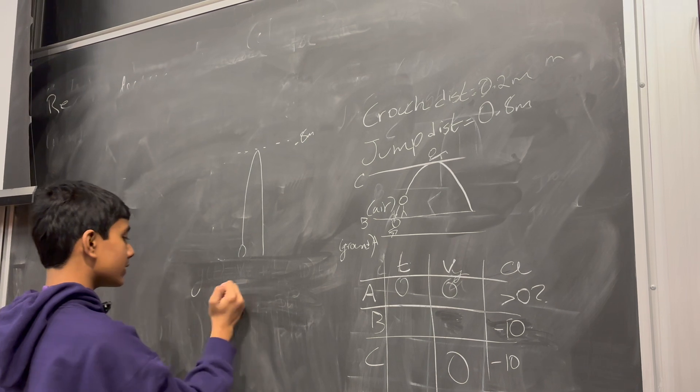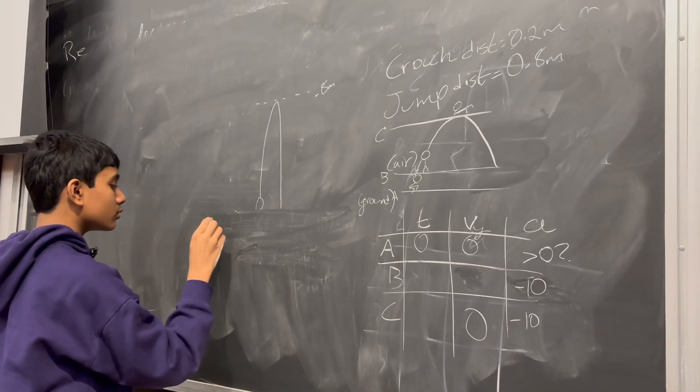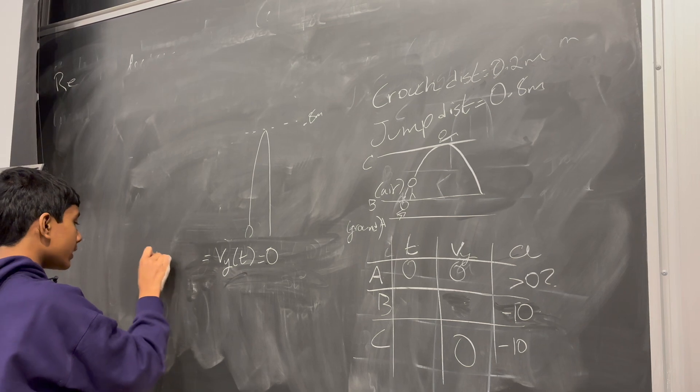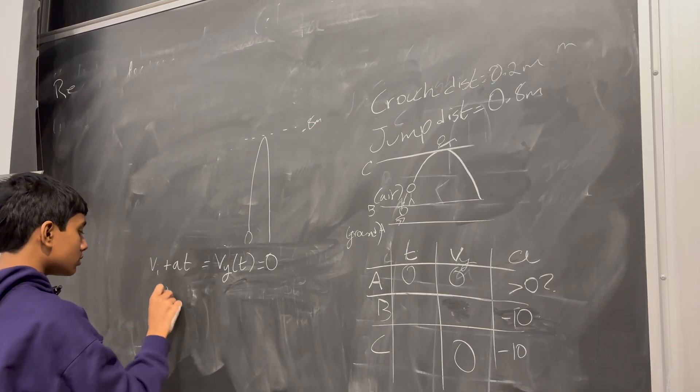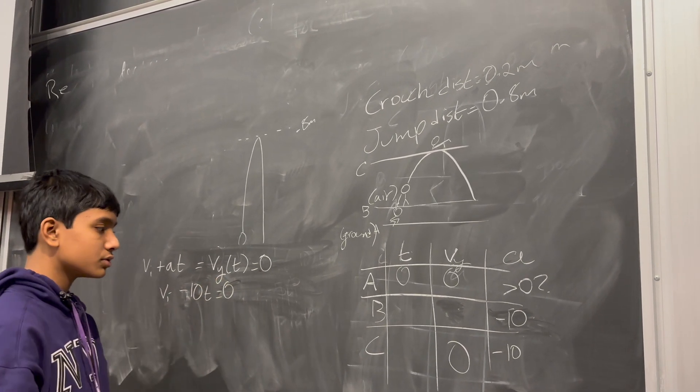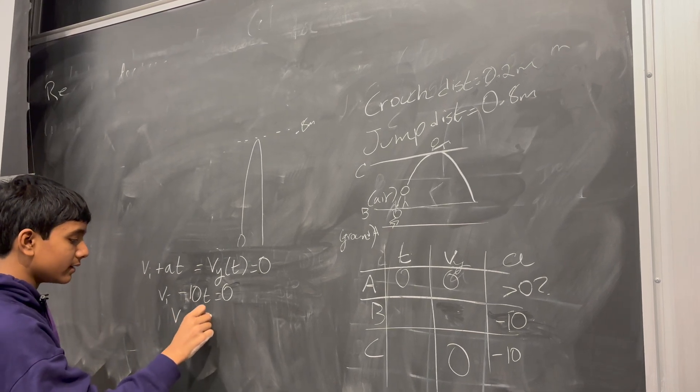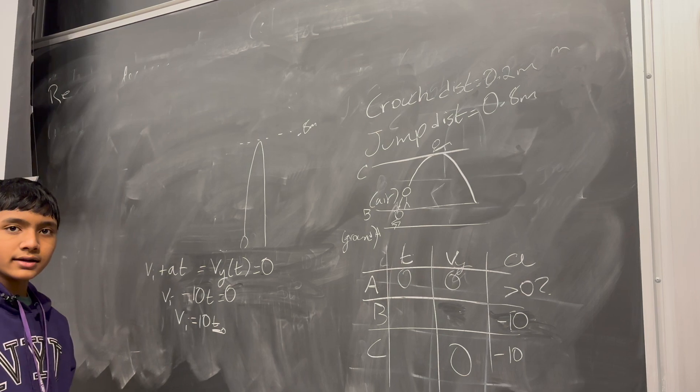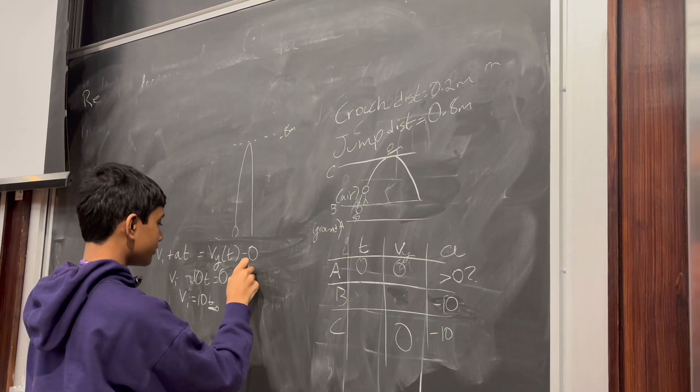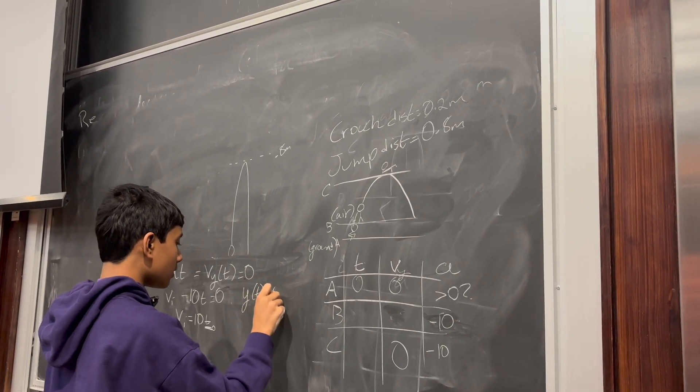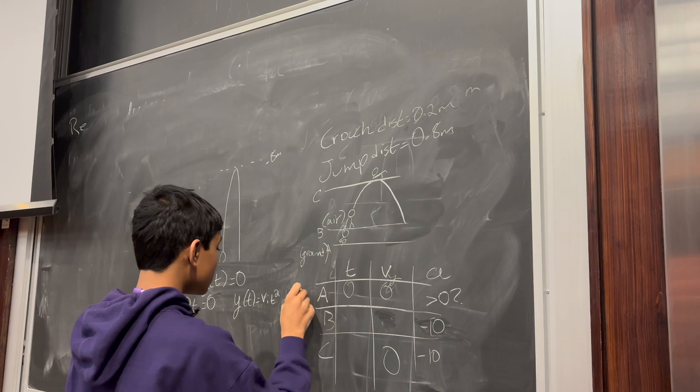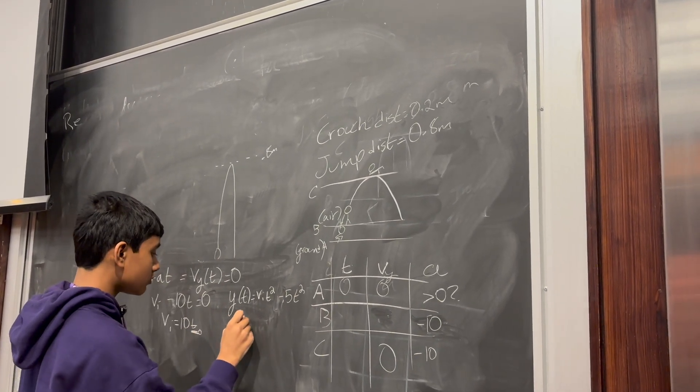Now, we know that its maximum height is 0.8. So, let's actually find it this way. At the maximum point of ascent, we know that Vy has to be equal to zero. And, this is also equal to Vi plus At. So, we get Vi minus 10t is equal to zero. So, that means Vi is equal to 10t. And, I'll call this T0 to stand for the point in which this happened. So, then, we have D equals Vit plus half At squared. Minus 5t squared.